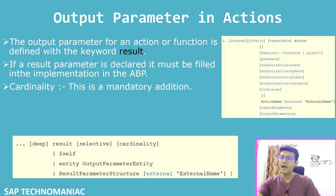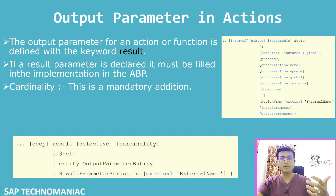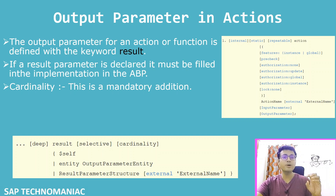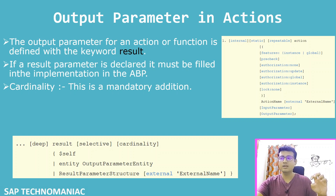You can also use some external name for your abstract entity, which will be visible in your OData service. Your result parameter can also be %$self, meaning the result parameter is the same type as the CDS entity where you declared the action. Additionally, your result can be 'selective' — instead of passing the entire data, you just want to pass some specific fields.